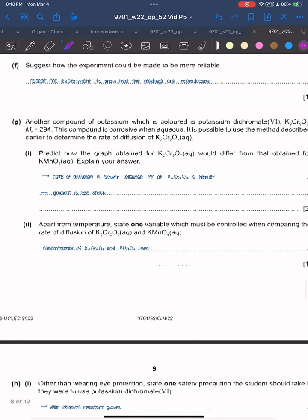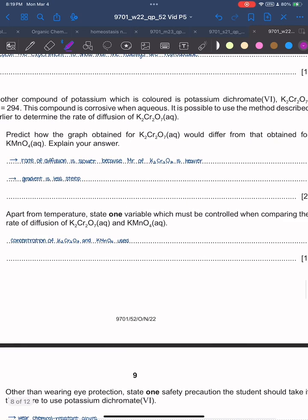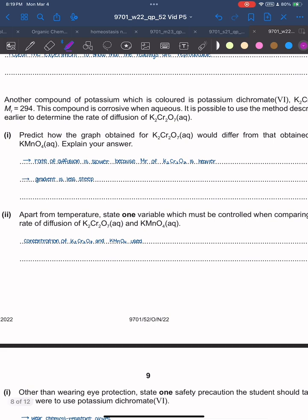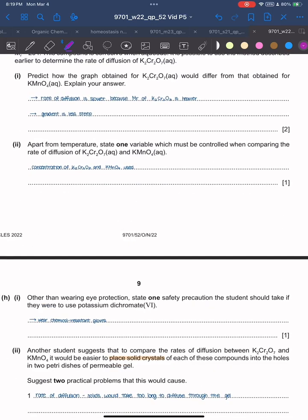Another compound of potassium which is colored is potassium dichromate. This compound is corrosive when aqueous. It is possible to use the method described earlier to determine the rate of diffusion of potassium dichromate. Predict how the graph obtained for potassium dichromate would differ from the one obtained by potassium manganate. Rate of diffusion is slower because Mr of K₂Cr₂O₇ is heavier, so the gradient is less steep.